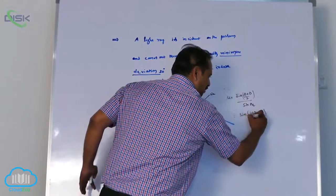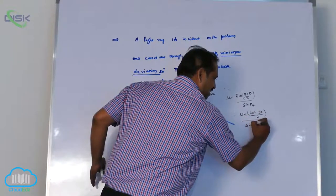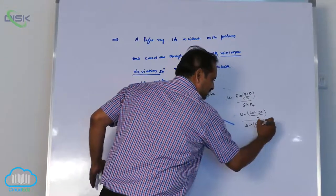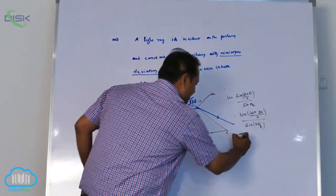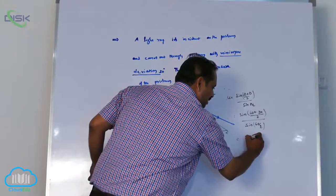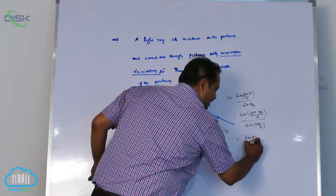By 2 upon sine 60 by 2. That is sine 90 by 2, sine 45 by sine 30.